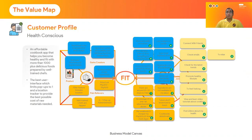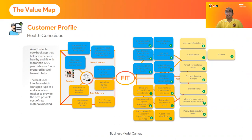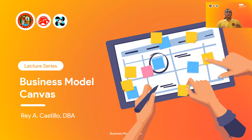The important thing in the value proposition canvas is what's in between — the two should fit. Your value map should fit what the needs and wants of your customers are, which includes their gains, pains, and jobs. I also created an example of how to convert the results of your value map into paragraph form, so you have something written for the value proposition as one of the components of the business model canvas. So let's start topic three.